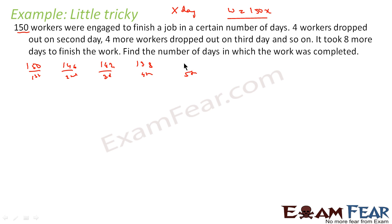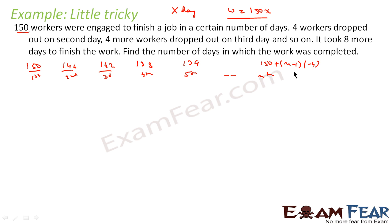They keep doing it like this. The normal pattern was that 150 workers should work for x days, but because workers kept dropping they do x plus 8 days — that is n days extra. Let's take the total number of days they actually took as n, where each day the workers reduce by 4, so the number of workers on day k is 150 + (k−1)×(−4). They took n days but were supposed to take n minus 8 days.